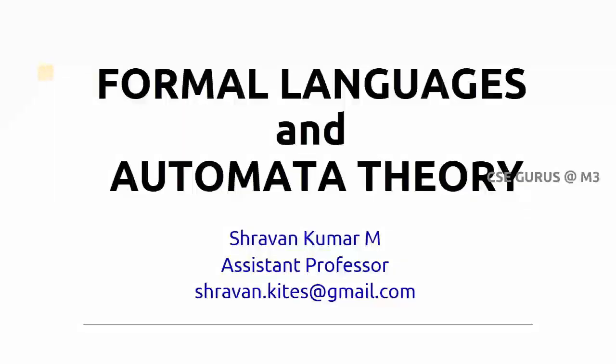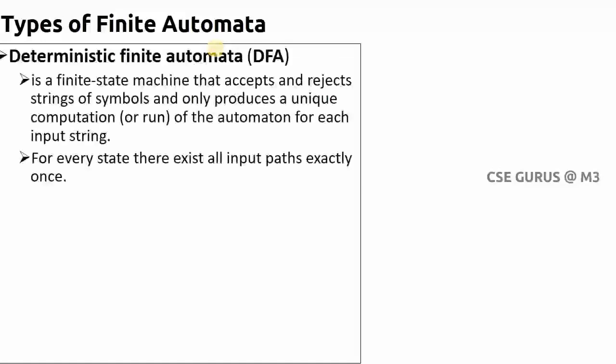Welcome to the class of Formal Language and Automata Theory. In the previous lecture we have seen what finite automata is and what are the types of representations of finite automata. Now we will see types of finite automata. We will divide it into two parts: the first one is Deterministic Finite Automata and the second one is Non-Deterministic.